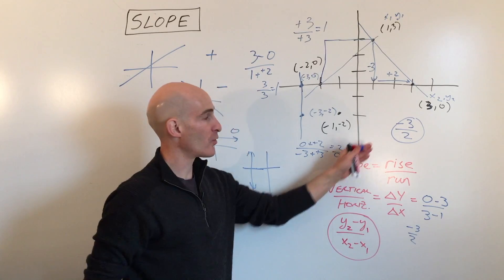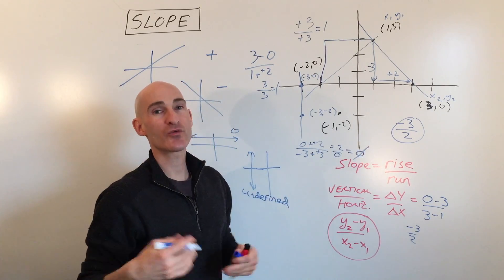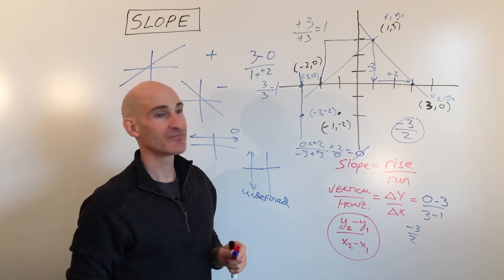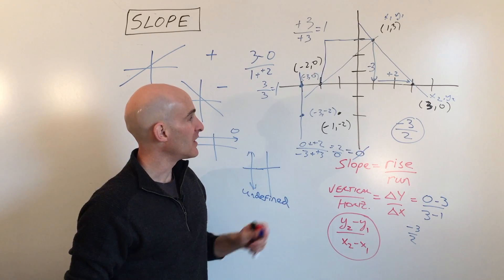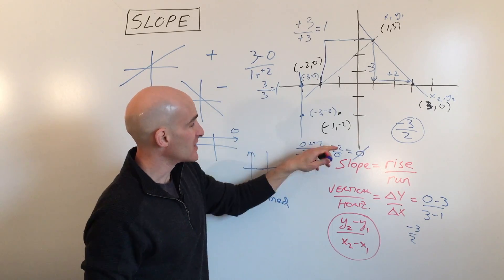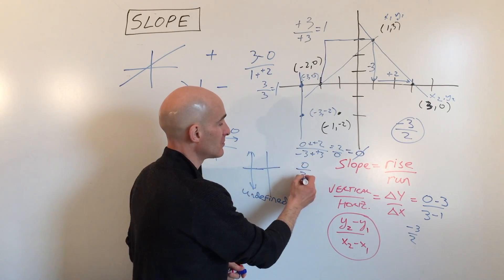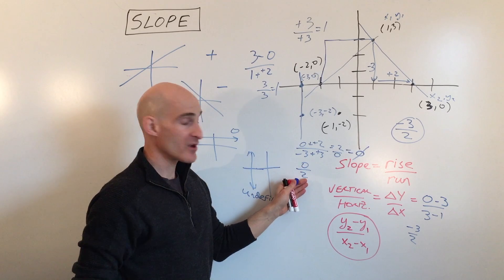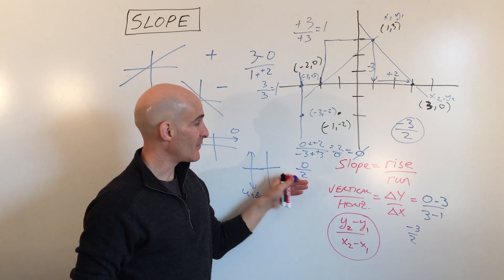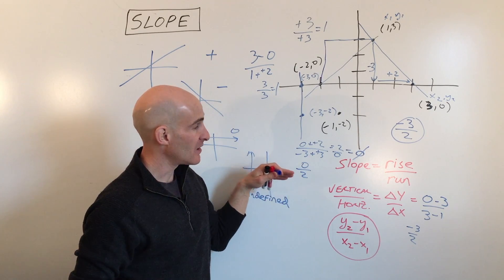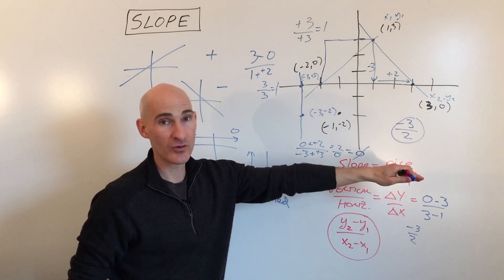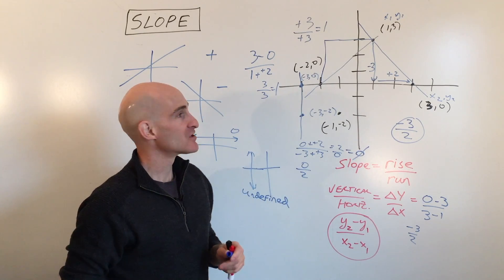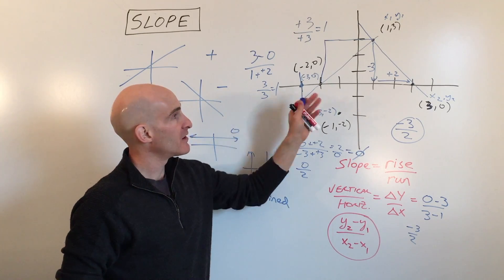An undefined slope means the line is vertical. On the other hand, if the result were zero over two — zero in the numerator with a non-zero denominator — that would be a slope of zero, which corresponds to a horizontal line.